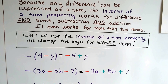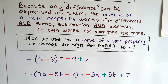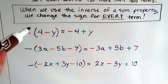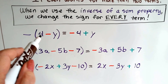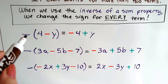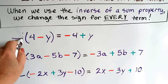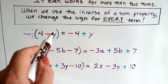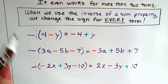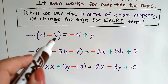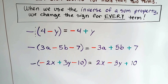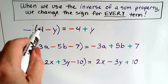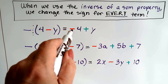It even works for more than two terms — sometimes algebraic expressions have five terms and it still works. When we use the inverse of a sum property, we change the sign for every term inside the parentheses. For example, we've got a negative on the outside, with positive 4 and negative y inside. Our invisible 1 is there: negative 1 times positive 4 gives negative 4, and negative 1 times negative y gives positive y — two negatives make a positive. So the signs just flip: positive 4 becomes negative 4, and negative y becomes positive y. When you see a minus sign in front of parentheses, just change the signs for everybody inside.